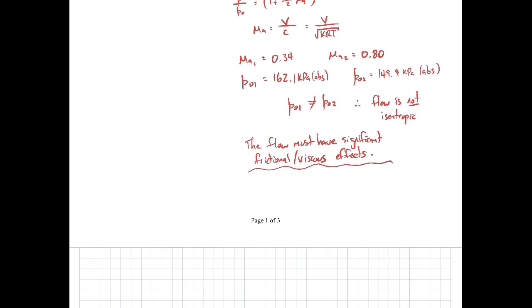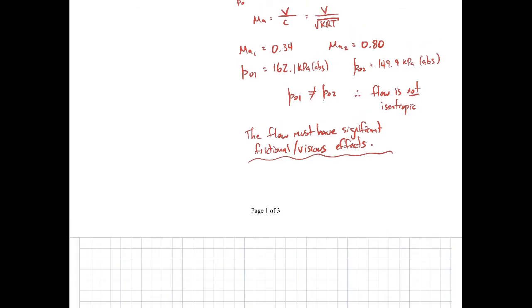One other thing I'll do as a bonus is draw a TS diagram for this flow. Here's the temperature, here's the entropy on that axis. Here's the stagnation temperature T naught one, and we know that equals T naught two. Our initial stagnation pressure is 162, larger than the stagnation pressure at two. If I draw an isobar, here's our P naught one at a larger stagnation pressure than P naught two, which would be over here.